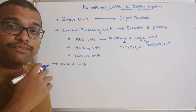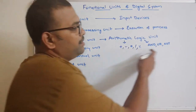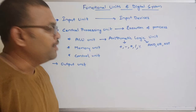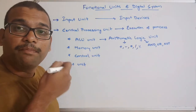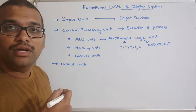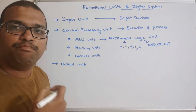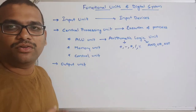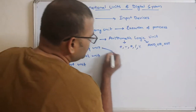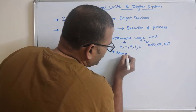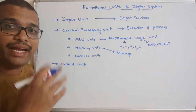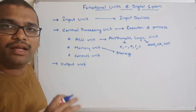If our instructions contain arithmetic or logical operations, those will be executed by the ALU. The next unit is the memory unit. The major advantage of any digital system is its memory unit, because this memory unit is meant for storing data. This divides into two categories: primary memory and secondary memory.